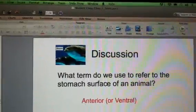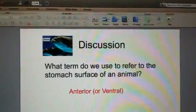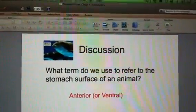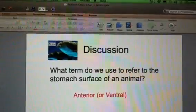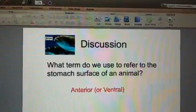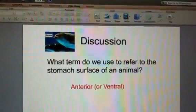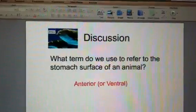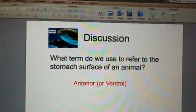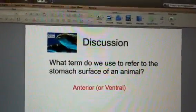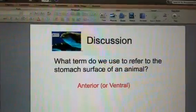In the next discussion question, we want to know what term we use to refer to the surface of an animal's stomach. In this case, we're looking for anterior or ventral. So if your dog wants you to rub its stomach, it wants you to rub its anterior or ventral surface - a good way to think about it.